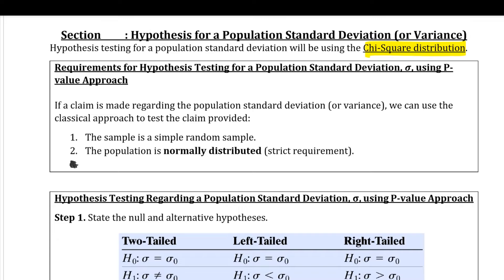Now we can get right into the six steps. If a claim is made regarding a population standard deviation or variance, we can use the p-value approach to test the claim, provided the sample comes from a simple random sample. There is also a very strict requirement that the population has to be normally distributed — you can't get around this by just having a sample size greater than 30.